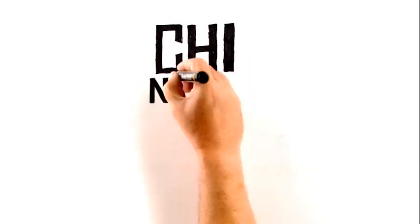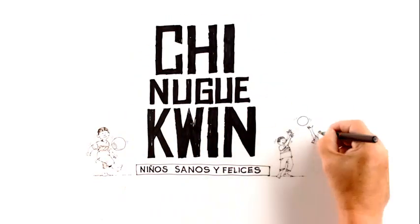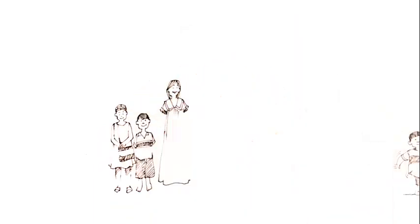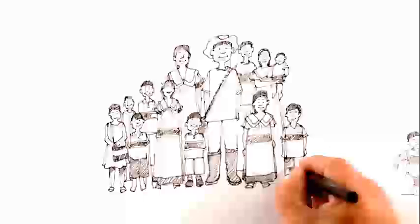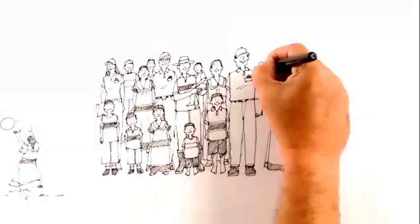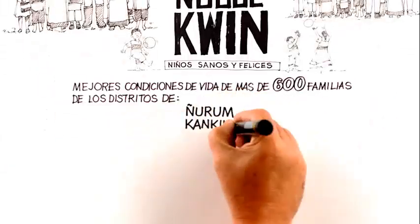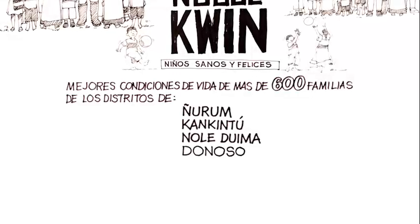The Chi Nuge Queen Project, or Healthy and Happy Kids, aims to help reduce severe child undernutrition and improve the living conditions of more than 600 families from the Nyurum, Canquintú, Nole Duima and Donoso districts in the Nove Bugle communities.